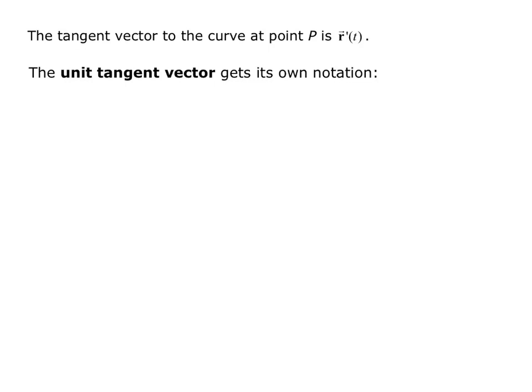The unit tangent vector gets its own notation. Capital T of t is equal to r prime of t over the magnitude of r prime of t. And we know from previous lessons that r prime of t is the same as the velocity, so the derivative of position is velocity. So we can think of our unit tangent vector as velocity divided by the magnitude of velocity.